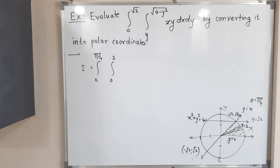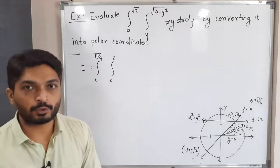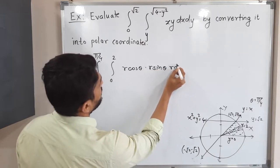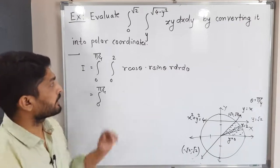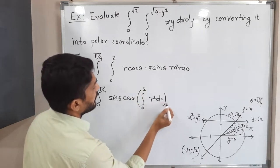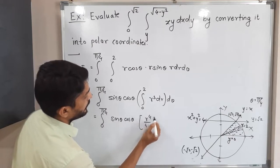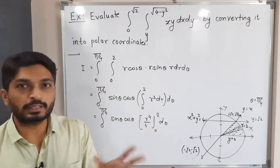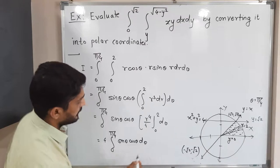Now we express the integral in polar form. Inner integration is with respect to r from 0 to 2, and outer integration with respect to θ from 0 to π/4. The integrand becomes r cos θ · r sin θ · r dr dθ. Since θ is constant when integrating with respect to r, cos θ and sin θ come outside, giving ∫₀^{π/4} sin θ cos θ [r⁴/4]₀² dθ. Substituting limits, the upper limit gives 16/4 = 4, and the lower limit gives 0.